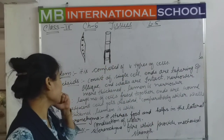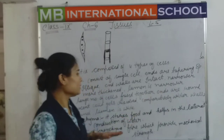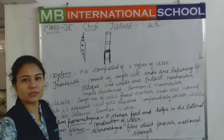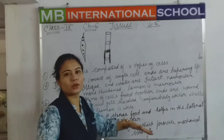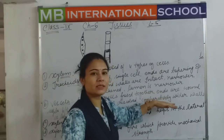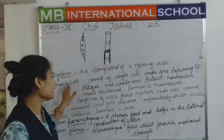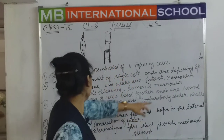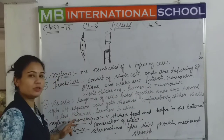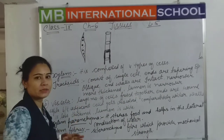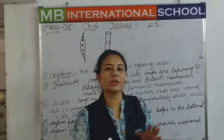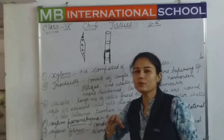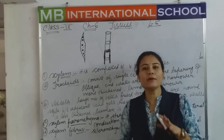Vessels are comparatively wider than tracheids. When you compare vessels with tracheids, vessels are wider in structure while tracheids are narrower. The walls of vessels are less thickened compared to tracheids.